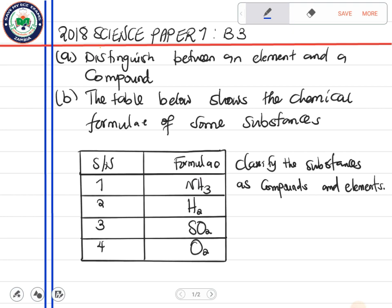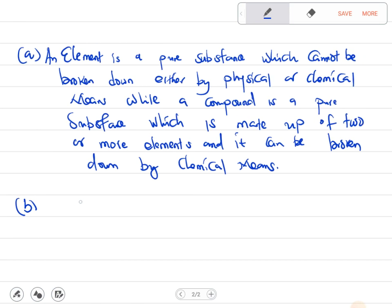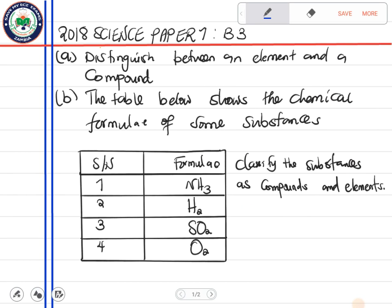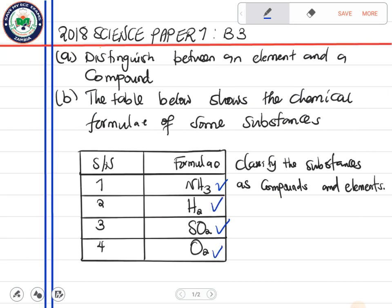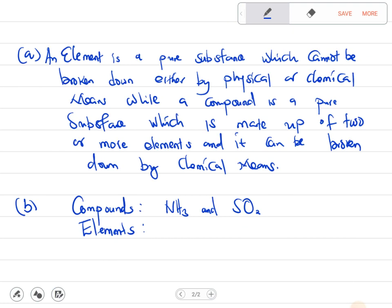Now for part B, we have to classify each of these as element or compound. So let us write compounds here and elements. Which ones are elements and which are compounds? Ammonia (NH3) and sulfur dioxide (SO2) are compounds. These are diatomic molecules, but they're just elements which you can easily get from the periodic table. So O2 is an element and H2 is an element.